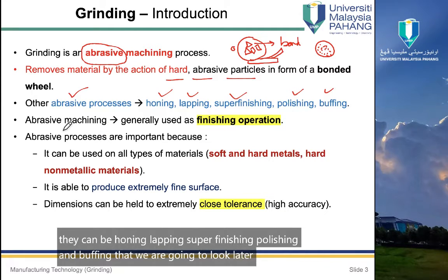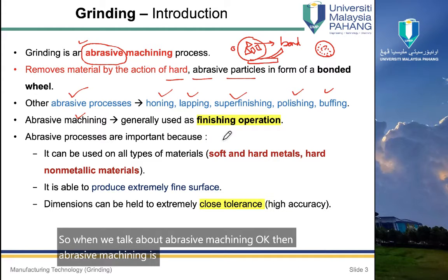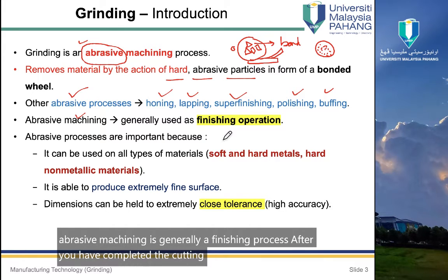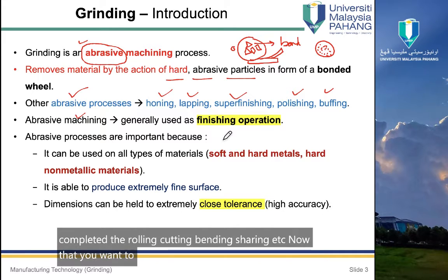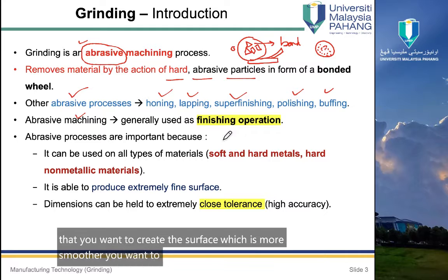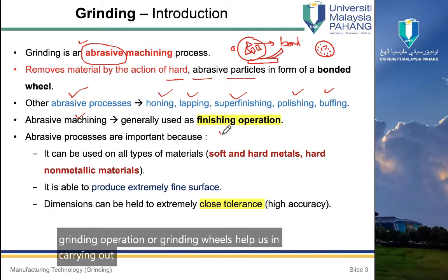Abrasive machining is generally a finishing process. After you have completed the cutting process — rolling, cutting, bending, shearing — you want to clear and finish the surface to make it smoother. This is when grinding operations and grinding wheels help us carry out our finishing operation.